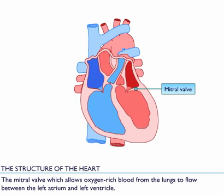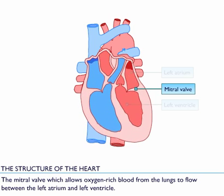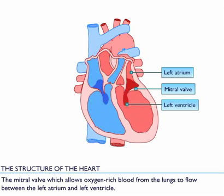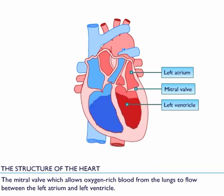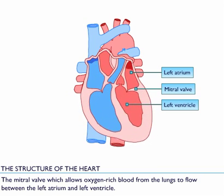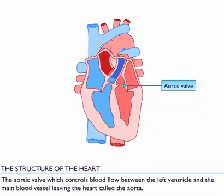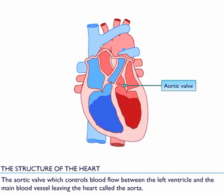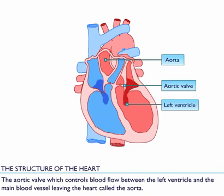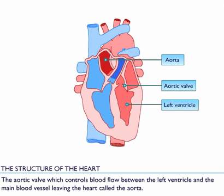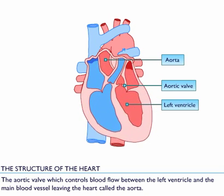The mitral valve, which allows oxygen-rich blood from the lungs to flow between the left atrium and the left ventricle. The aortic valve, which controls blood flow between the left ventricle and the main blood vessel leaving the heart, called the aorta.